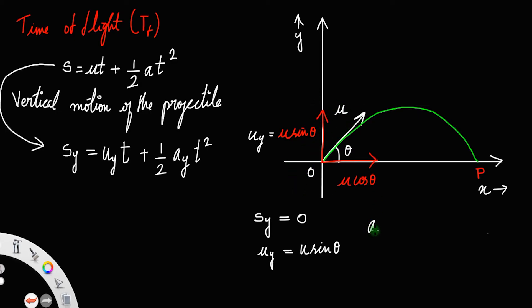And a_y, now this thing a_y, there is always gravity, that is acceleration due to gravity in the downward direction. Since it is directed towards the ground or in the downward direction, you have to take minus g. So this will be minus g.